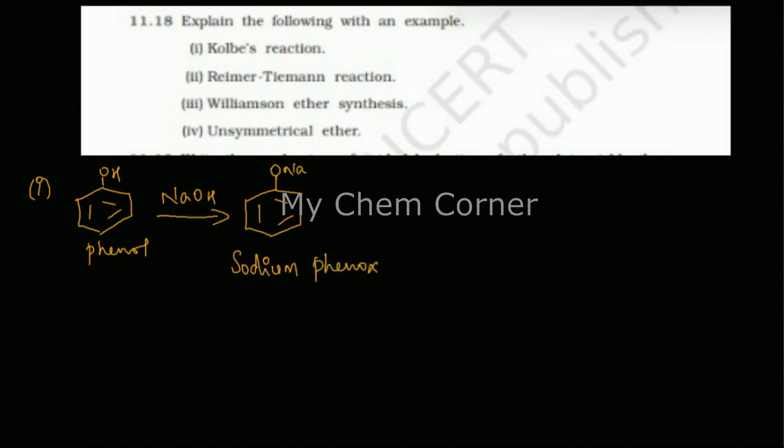...phenoxide. Why is it called phenoxide? This has oxygen with a negative charge and this has a positive charge. Because it was phenol and that oxygen had a negative charge, it's called phenoxide. What is bonded to it is a sodium, therefore it's called sodium phenoxide.